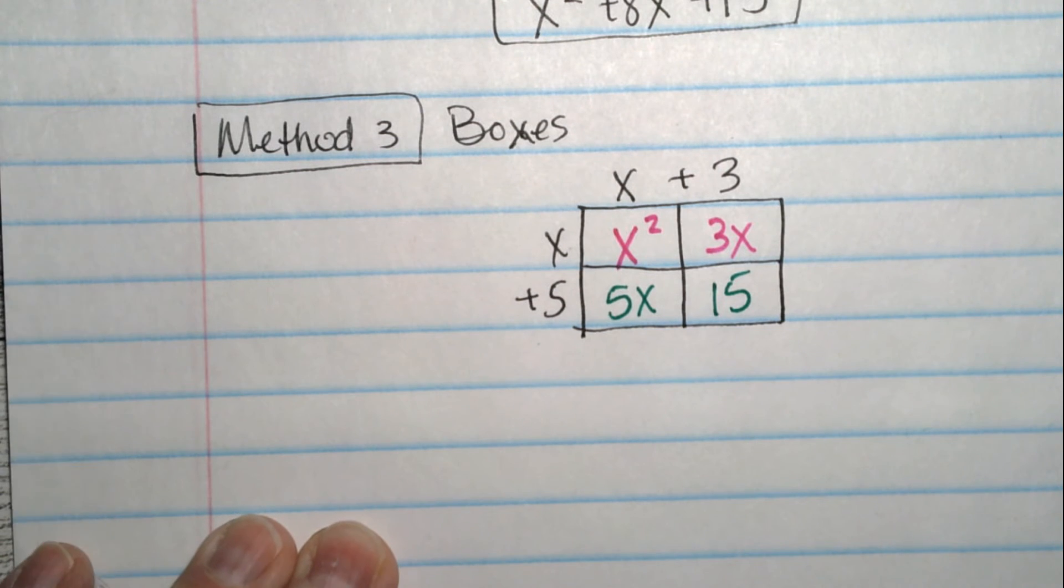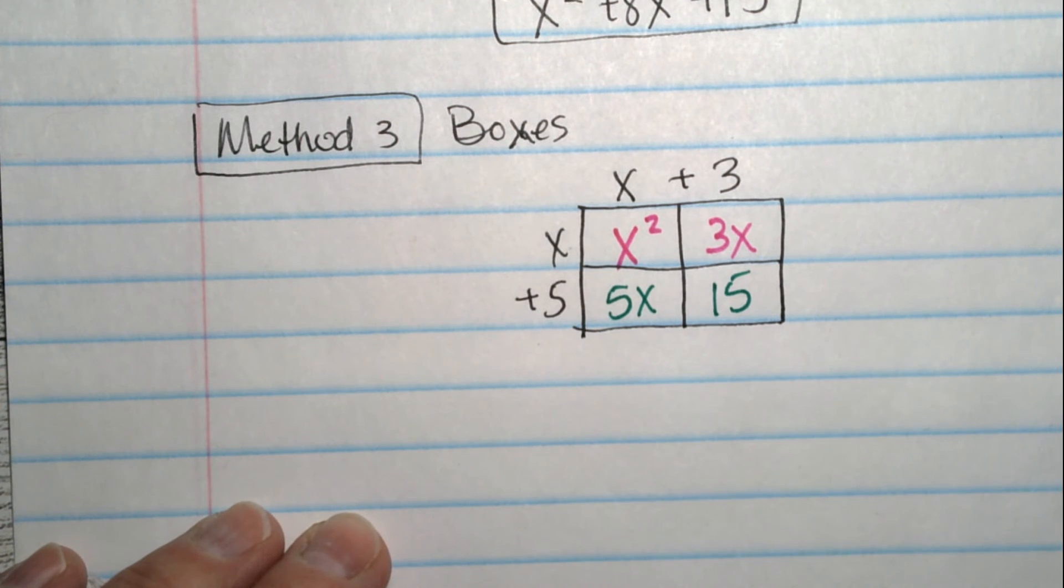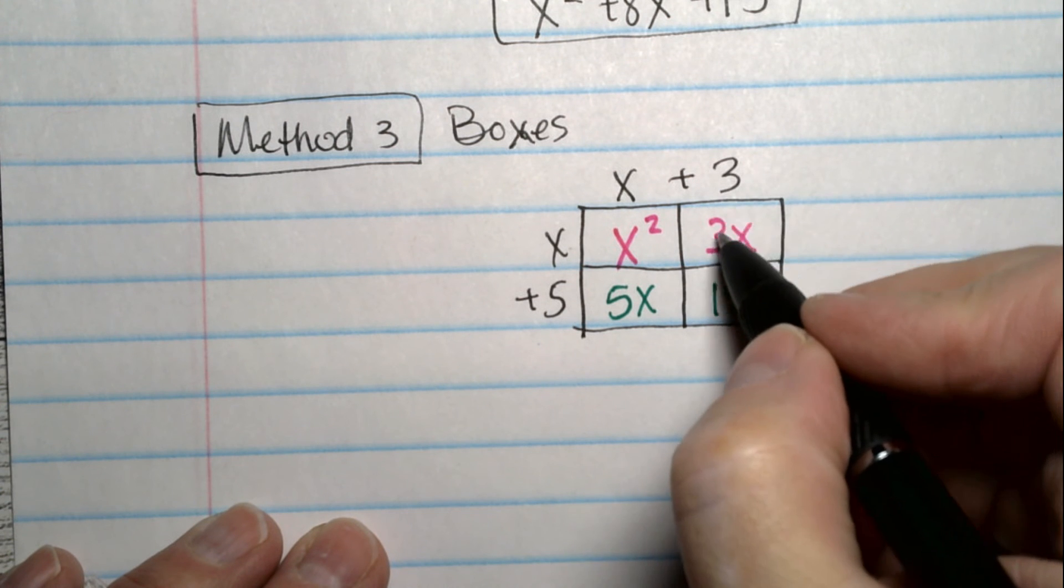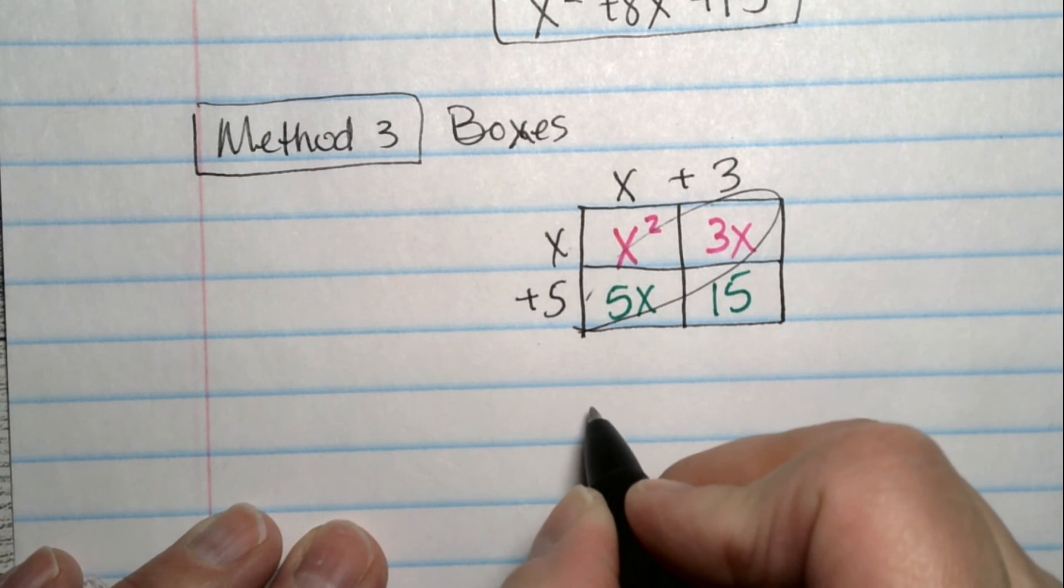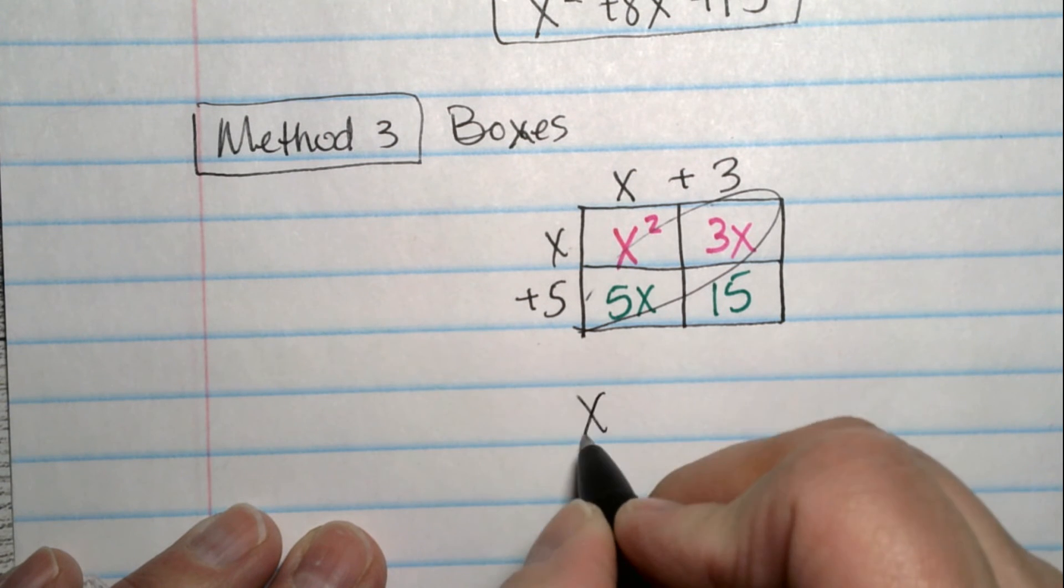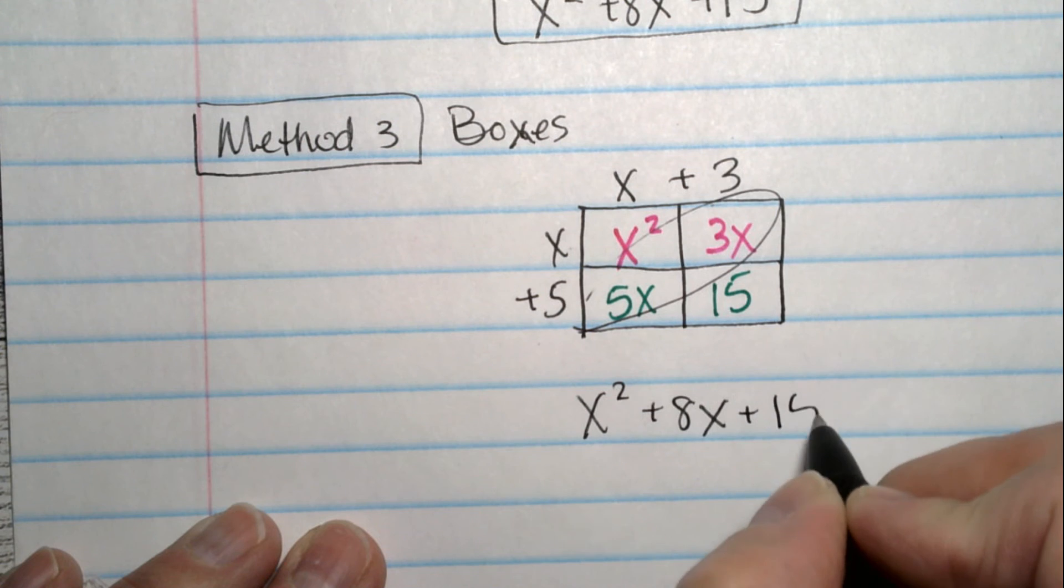And we still end up with the same parts in the middle. We have an x squared plus 3x plus 5x plus 15. Look back on your paper. That's what we had. So let's just add these two together. These two added up are 8x. So we end up with x squared plus 8x plus 15.